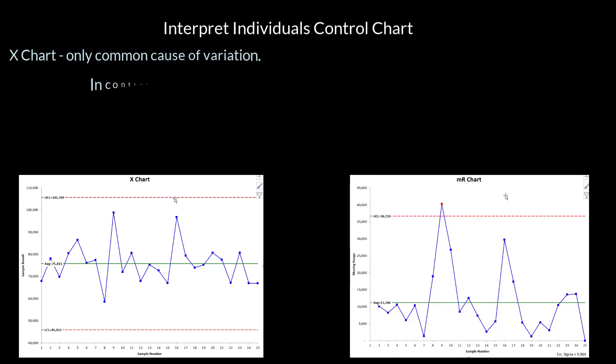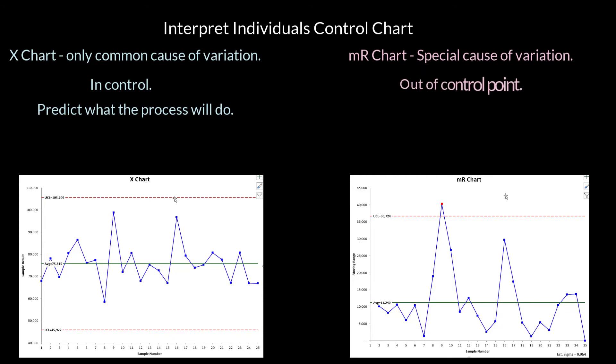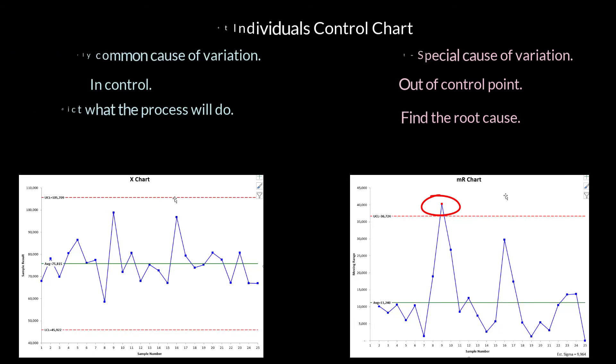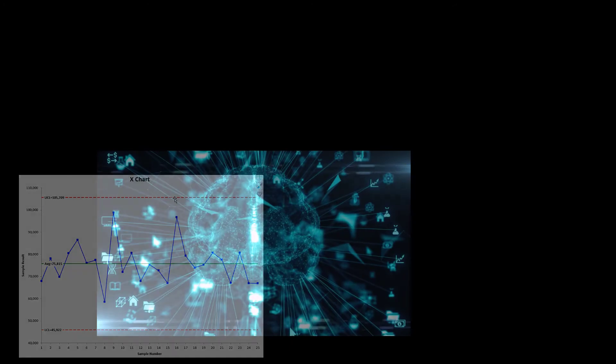Interpreting the individuals control chart, again, all the tests apply to the X chart: points beyond the control limit, zones, etc. The only thing that really applies to the moving range chart is points beyond the control limit. The X chart's in control here. The moving range has one out of control. So you want to find out what happened and correct that problem.